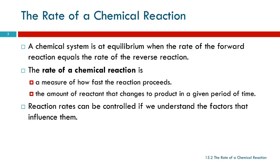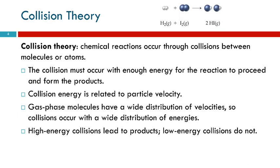So we need to talk about collision theory. Collision theory says that chemical reactions occur through collisions between atoms and molecules. If we've got this reaction of hydrogen and iodine to form hydrogen iodide, this reaction occurs when a hydrogen molecule and an iodine molecule run into each other.